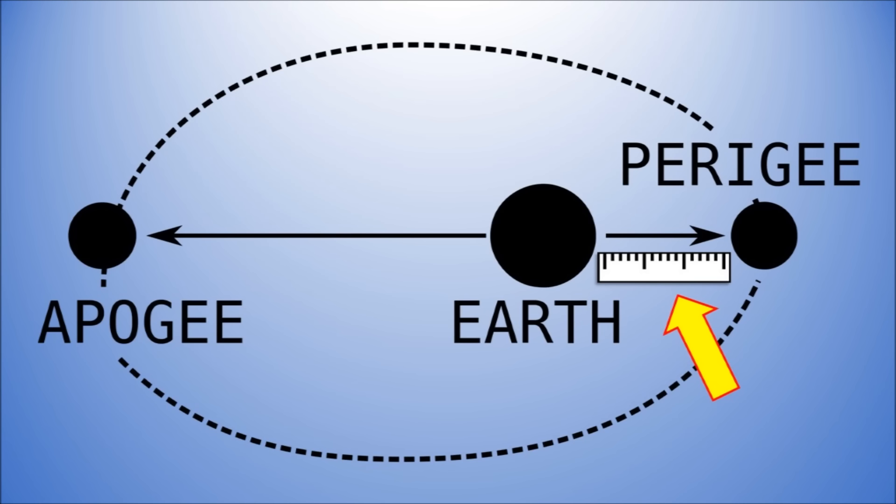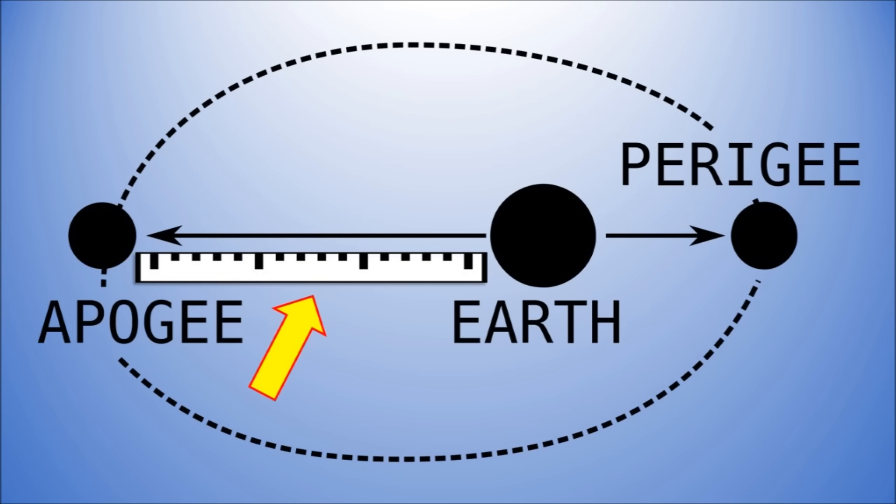It's the closest that the moon gets to the earth. The opposite is apogee, which is the word when it's farthest away.